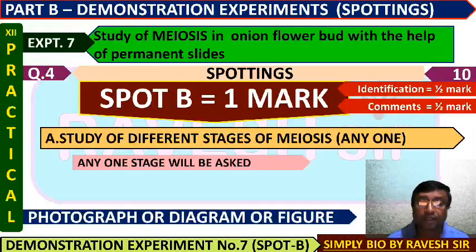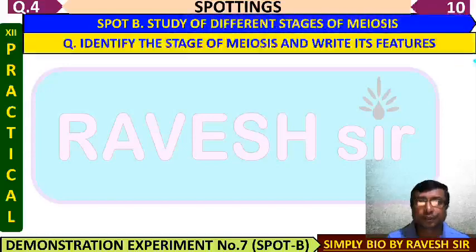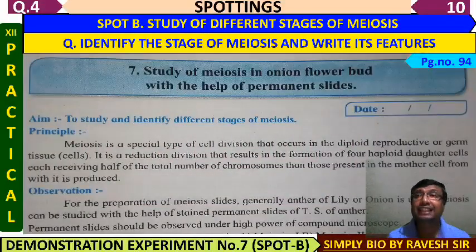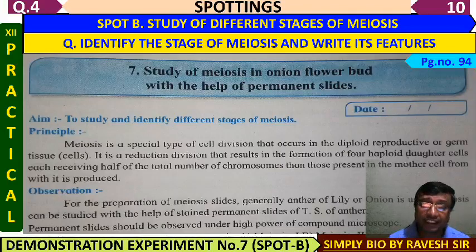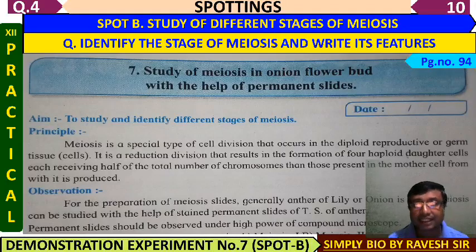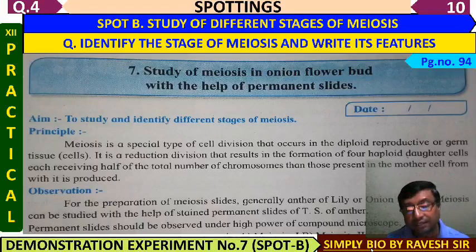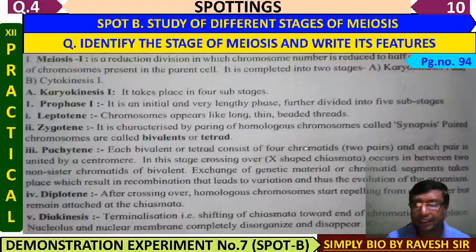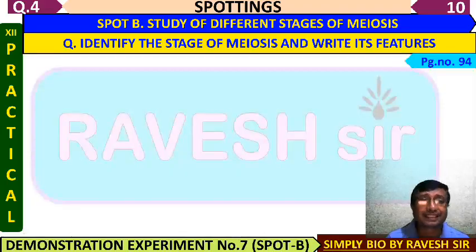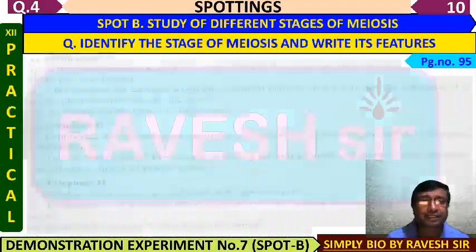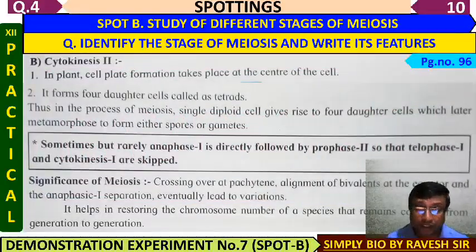Any one stage will be asked — a photograph or diagram. Spot B question is: identify the stage of meiosis and write its features. The principle is that meiosis is a special reductional division in which a diploid cell divides in two steps and ultimately produces 4 haploid cells. These cells are either spores or gametes which participate in sexual reproduction, so meiosis is necessary for gamete formation.